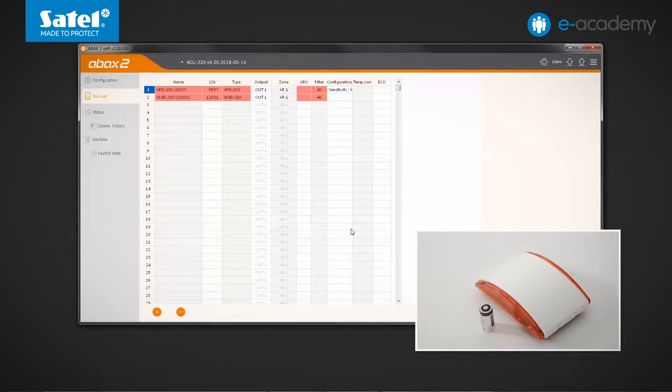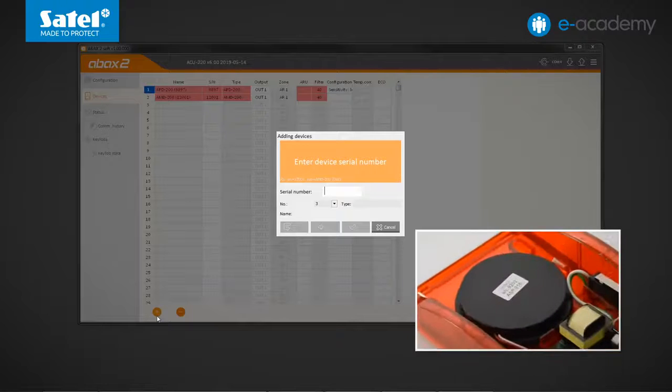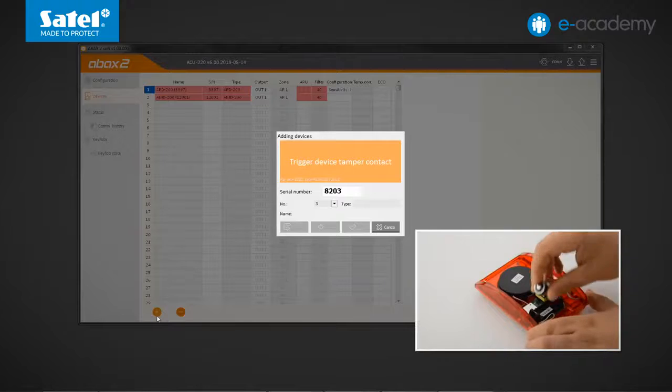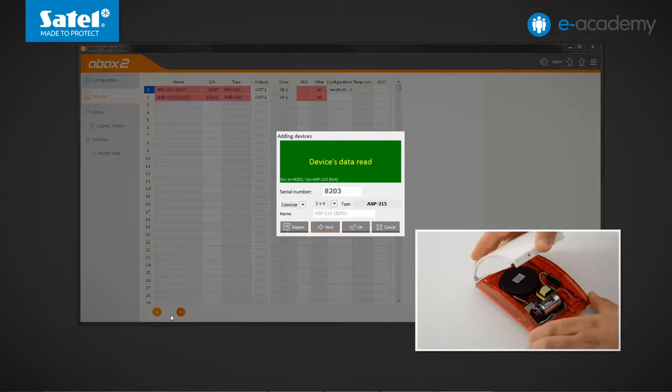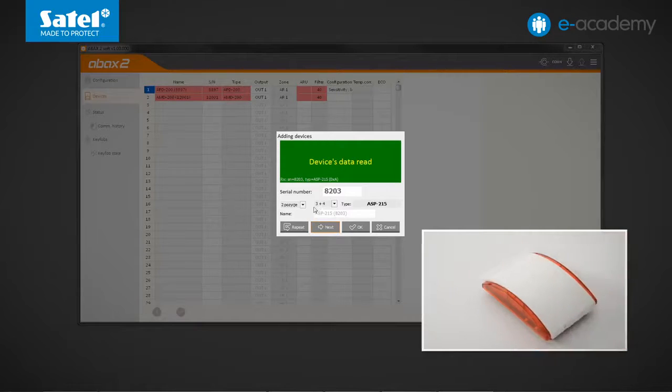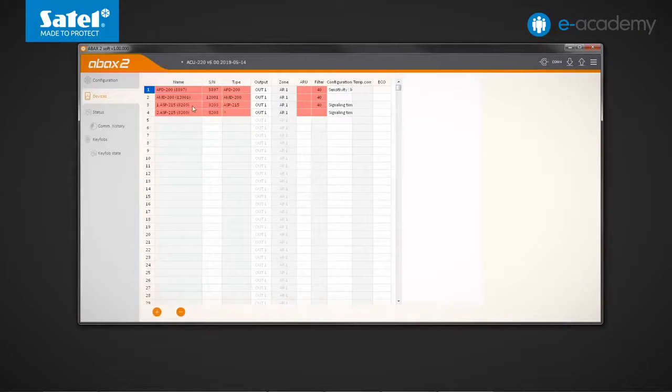Another device to be registered to the controller will be the ASP215 indoor acoustic optical siren. Click the plus button. Open the device enclosure. Find the serial number and enter it in the program. Violate the tamper switch or insert battery in the siren battery compartment. Device data has been loaded. We can close the enclosure. The ASP215 takes up two positions. Therefore, the program prompts us to use two of the available numbers. Click OK. The siren has appeared on the list. It occupies two rows in the table. After registering the devices, click on the send data button.